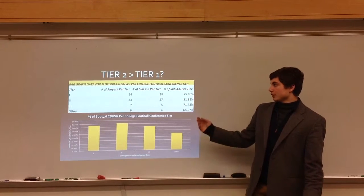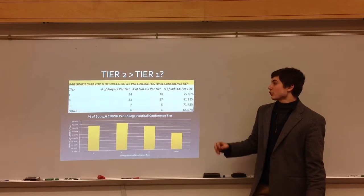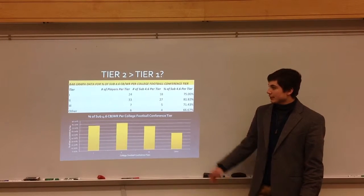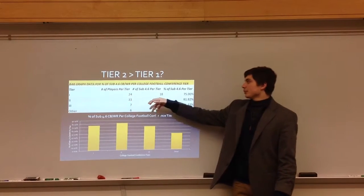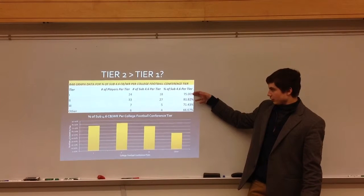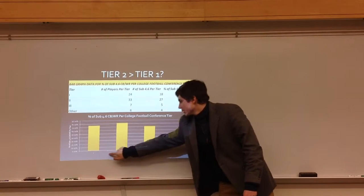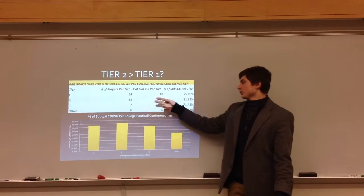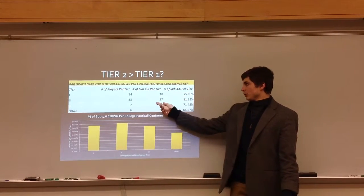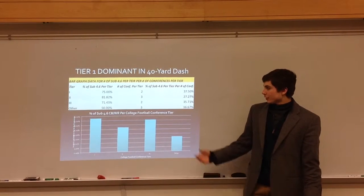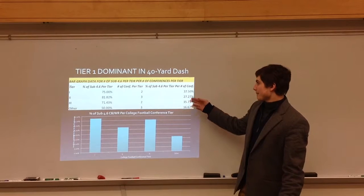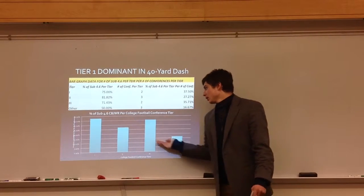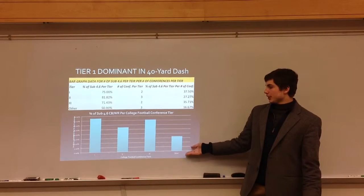Looking at bar graph data for the percent of sub-4.6 cornerbacks and wide receivers — 4.6 is a pretty fast 40 — per college football conference tier, you get the number of players per tier, the players under 4.6, and then the percentage under 4.6. When you look at it raw, Tier 2 appears bigger than Tier 1 simply because there are more players, making a bigger percentage. But once you divide by the number of conferences — two for Tier 1, three for Tier 2 — you see the expected result, with the exception of a spike.